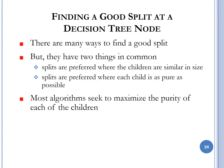Finding a good split at a decision tree node: splits are preferred where children are similar in size and where each child is as pure as possible. For example, grouping persons by age means grouping similar ages together. Most algorithms seek to maximize the purity of children or leaf nodes. A node with five C0s and five C1s has high impurity; a node with nine C0s and one C1 has low impurity because it is predominantly one class.